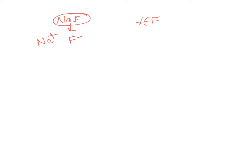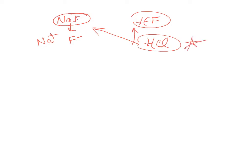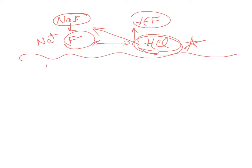We want to look at what we have disturbed the buffer with — in this case HCl. The first question to ask is: which of the two buffer components will this contaminant react with? It's an acid, so it's going to react with the base. The first thing you do in a disturbed buffer problem is write a balanced reaction between the contaminant and the buffer component it reacts with.